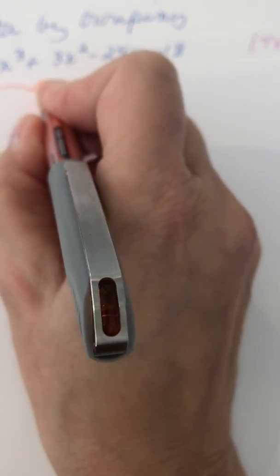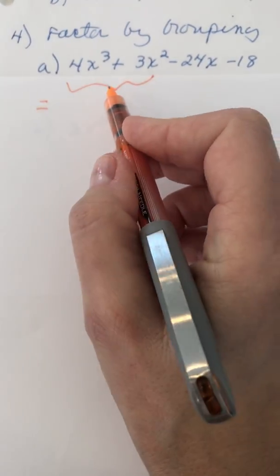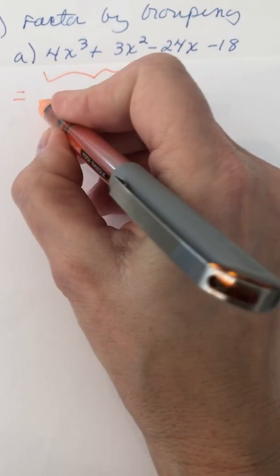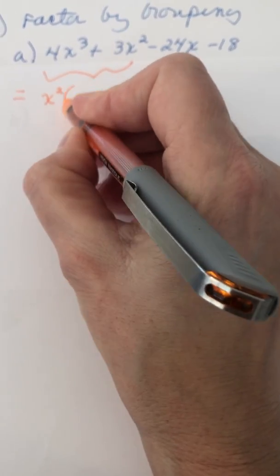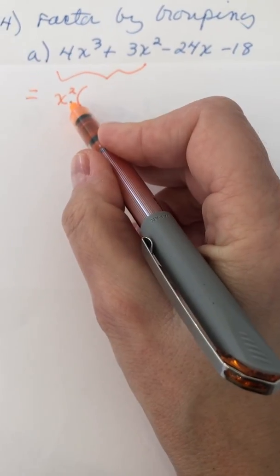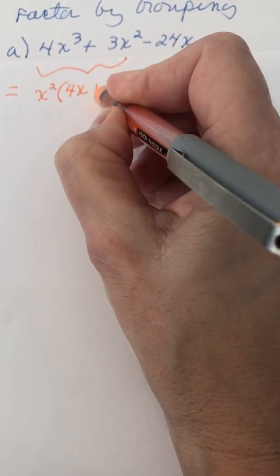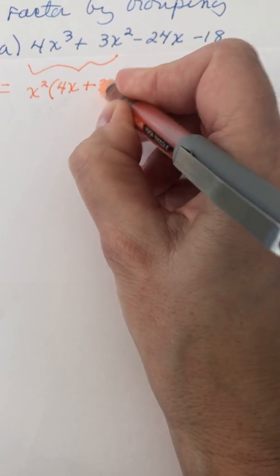We're gonna group together the first two terms. There's nothing in common between three and four, but there are two x's in common. So we can factor that out. And then we have 4x left and a plus sign and a three.